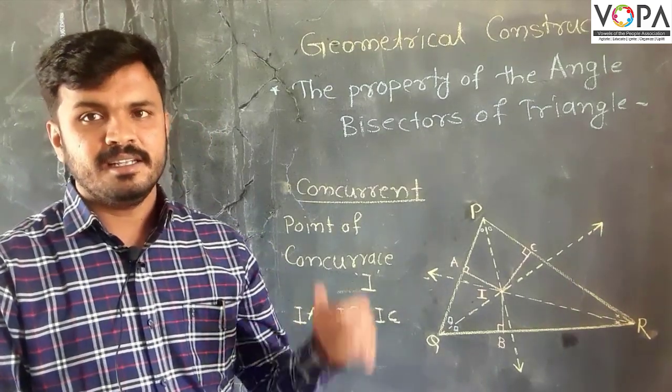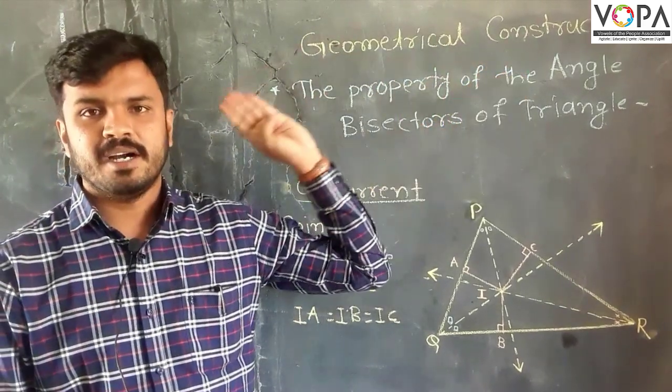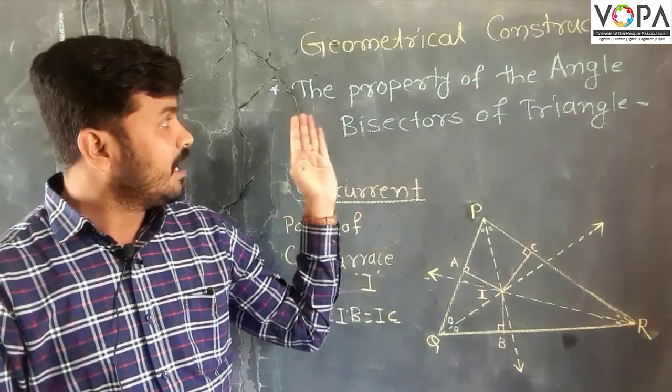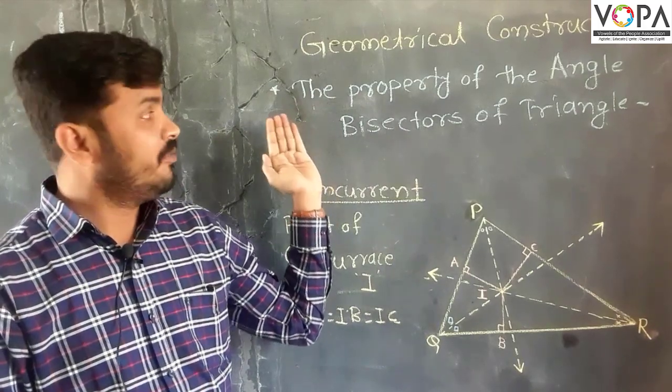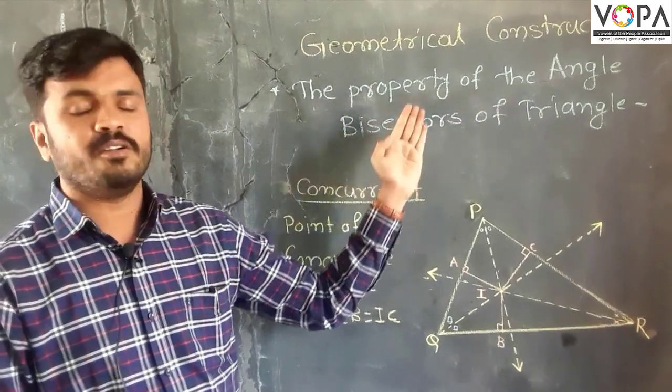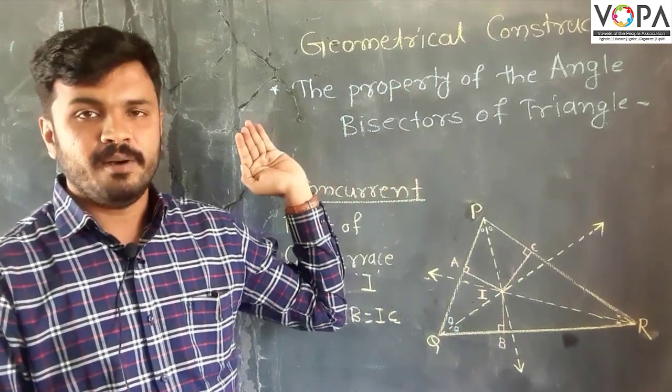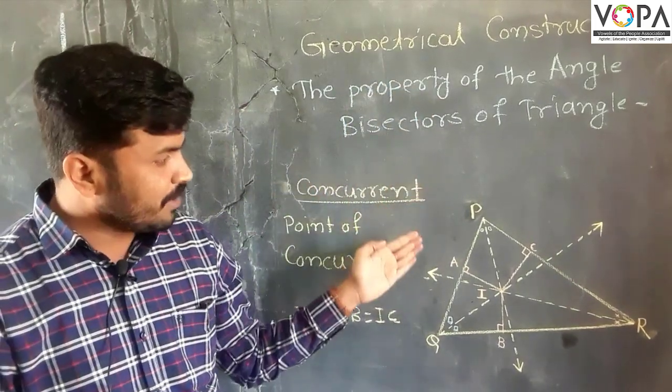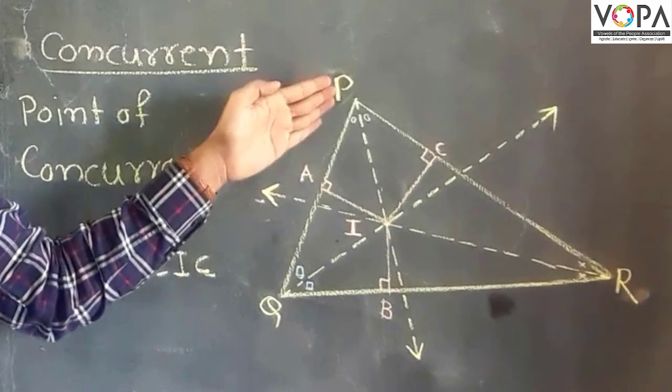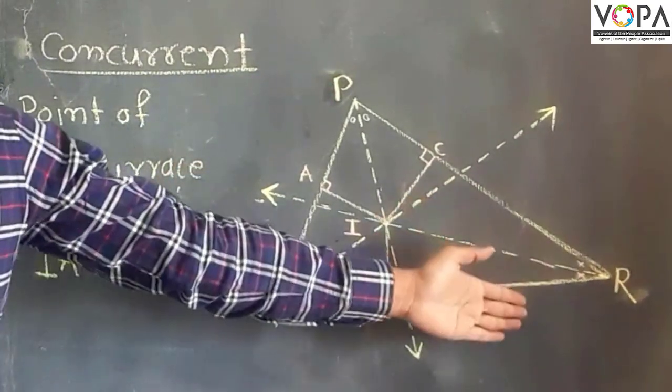Now first, we learn about the first property of the angle bisector of the triangle. So we first draw triangle PQR.